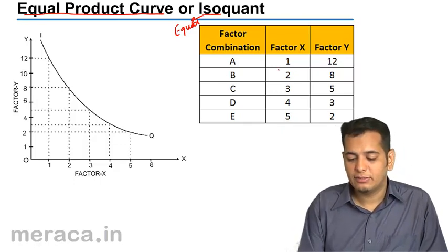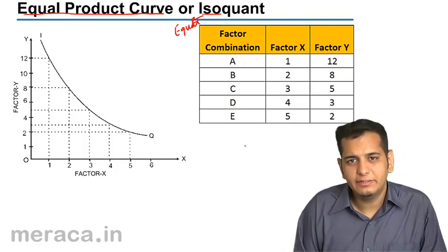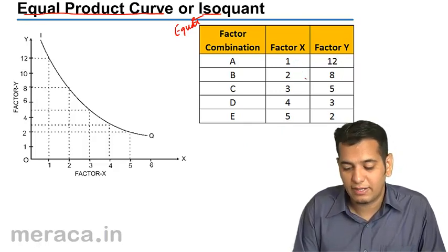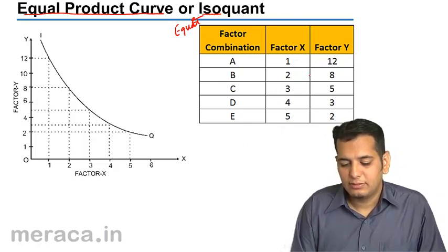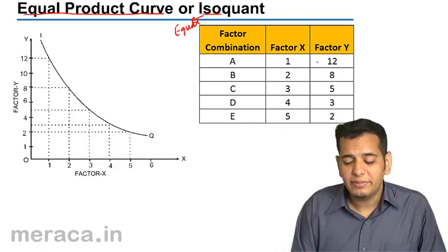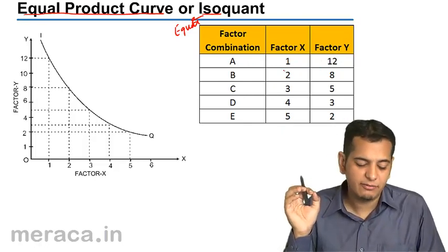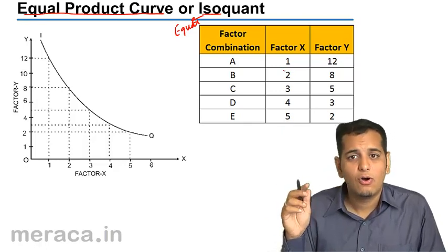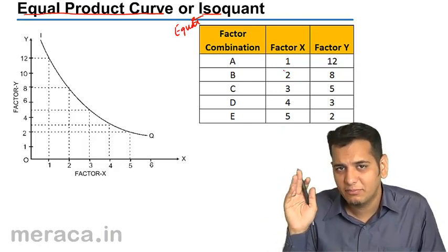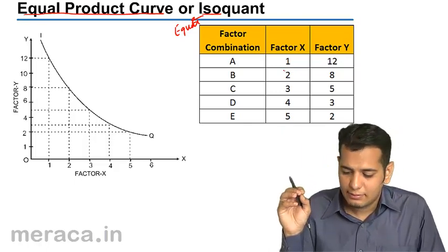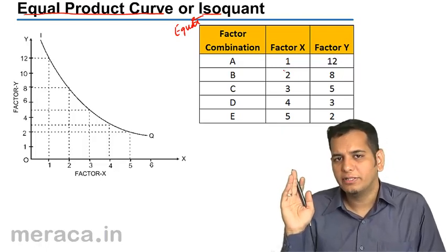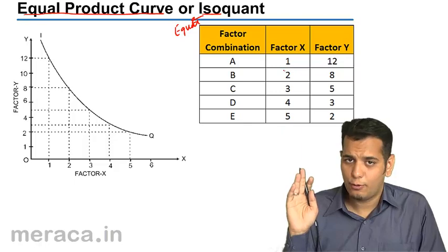In the schedule, we have combinations A, B, C, D, and E, with two factors of production: Factor X and Factor Y. All these combinations — A, B, C, D, and E — give me the same level of production, just as in indifference curves all combinations of goods give you the same level of satisfaction.